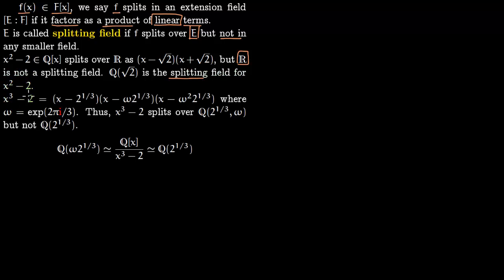Consider another polynomial, x³ - 2 over the rationals. This splits as a product involving ω, the cube root of unity, i.e., e^(2πi/3). So x³ - 2 splits over ℚ(2^(1/3), ω). Notice that it also splits over the complex numbers, but that is too big. It does not split over the smaller field ℚ(2^(1/3)) because that field does not contain the complex number ω, the cube root of unity.